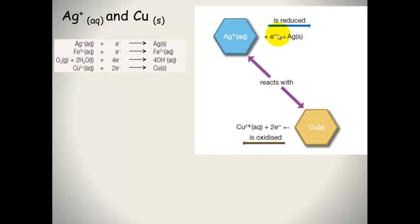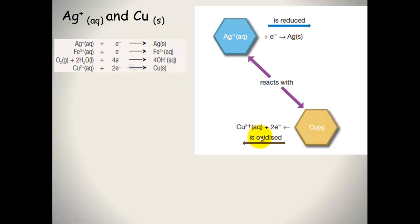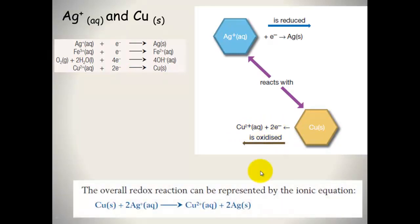So silver is reduced — it's gaining electrons to form silver solid. It moves in a forwards direction because it's the top reaction on the electrochemical series. It reacts with something lower on the right hand side, which is copper solid. Copper solid is oxidized to become Cu²⁺ plus two electrons. For the overall reaction, you need to balance the electrons — which is why silver gets a coefficient of two — and then you add the equations together.